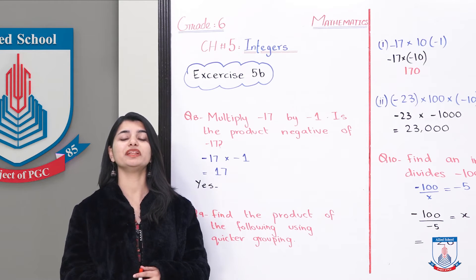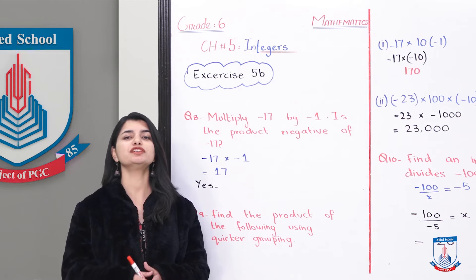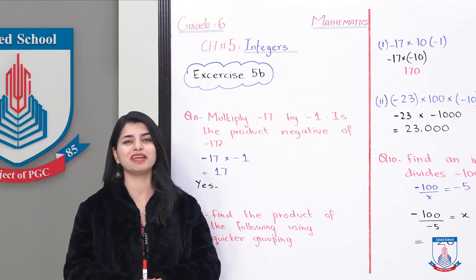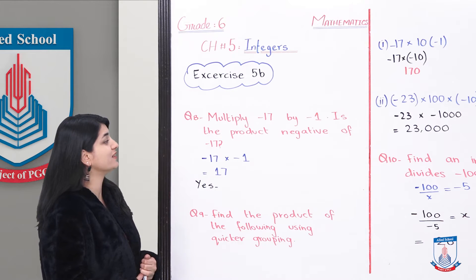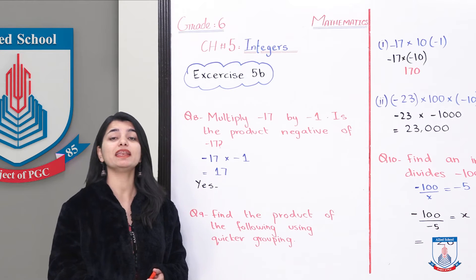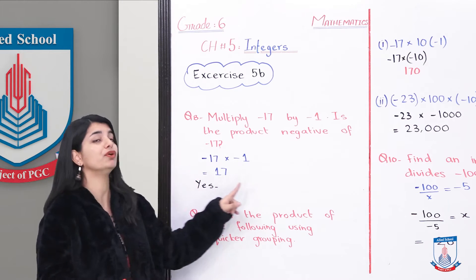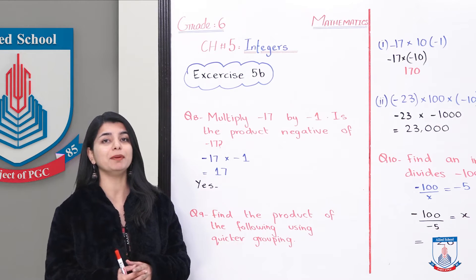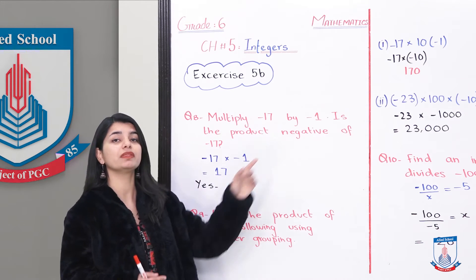We will start doing these questions from question number 8 onwards. Let's see question number 8. Question number 8 is: multiply minus 17 by minus 1. Is the product the negative of minus 17? So what you have to do is multiply negative 17 by negative 1, and tell what is the negative of minus 17.